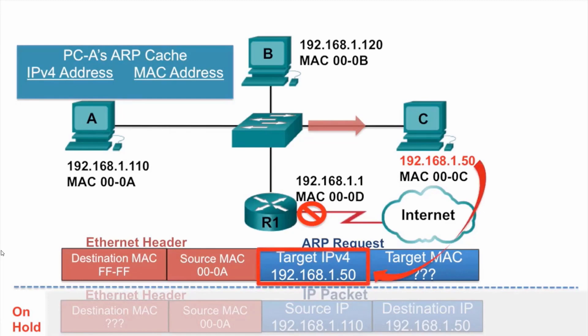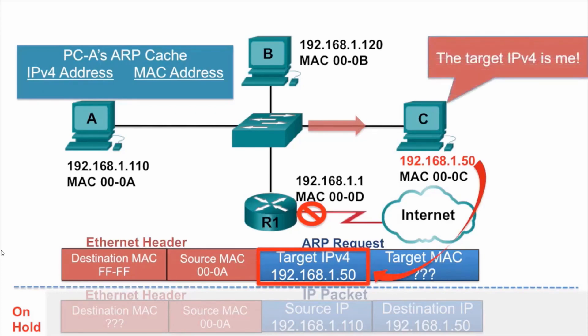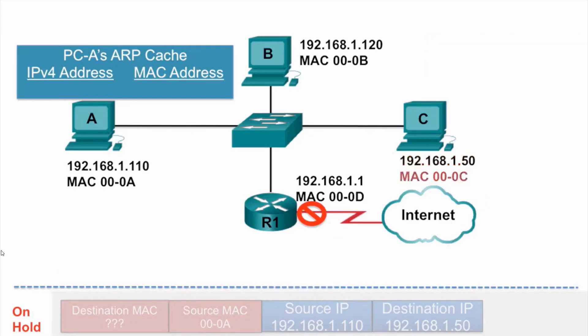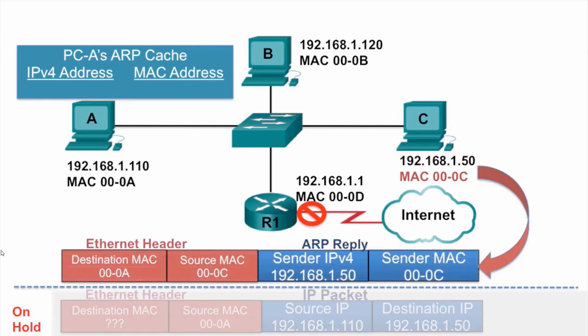PCC, when it received the ARP request, examined the target IPv4 address and compared it against its own IPv4 address and noticed that it was the intended target. So PCC will generate an ARP reply in response to that ARP request.